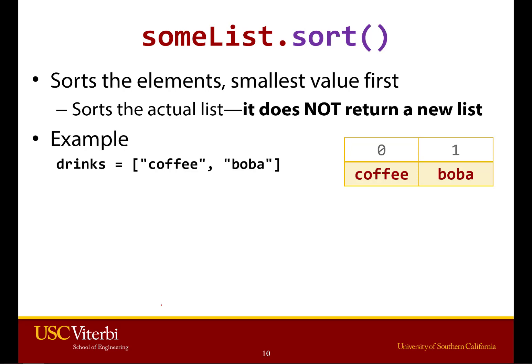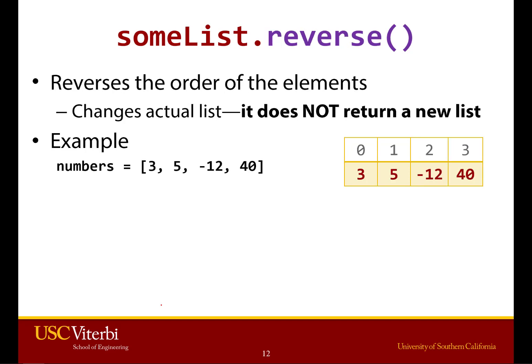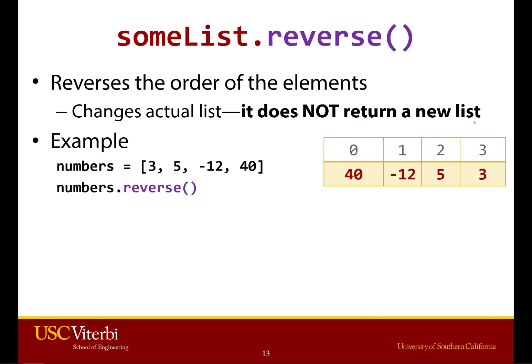Another example of sort: it also works with lists of strings. So you can see if we sort here coffee and boba, we get boba and coffee. So it sorts in alphabetical order or in numeric order, depending on what you have. Reverse, again, does not return a new list — it arranges the items within the list itself. It simply reverses whatever the order is, so it has nothing to do with sorting. It takes the items and shifts them so the first becomes the last and the last becomes the first.